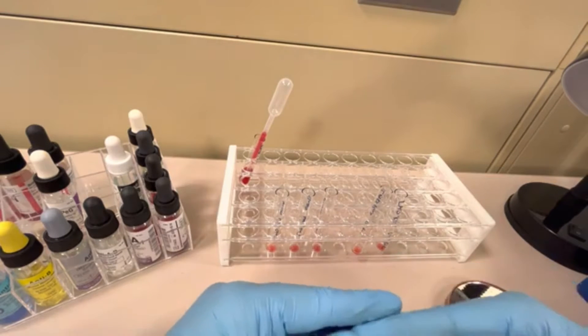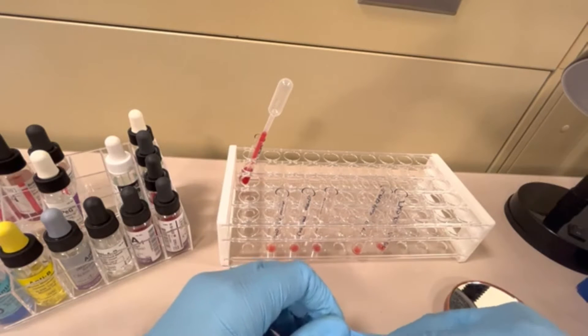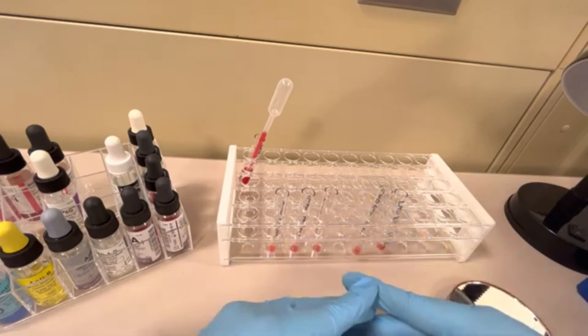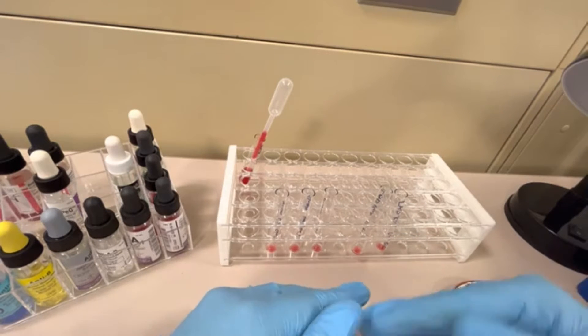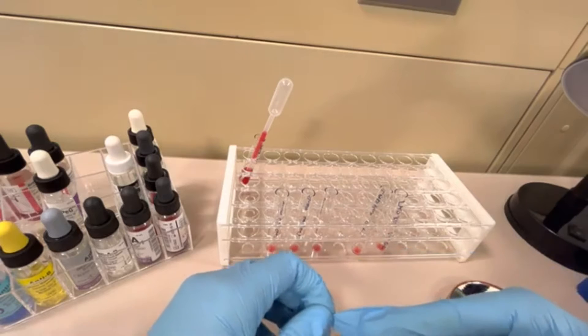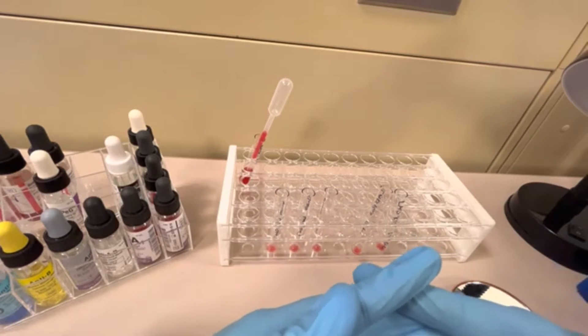You can use an automated cell washer. These are instruments that you put the tubes in and tell it how many times you want to wash it, and it just automatically does it. Or you can do it manually.